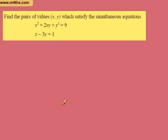In the last tutorial, we introduced simultaneous equations — linear, and when we had a linear and a non-linear. It's not always the case of it being a linear and a quadratic. It could be a linear and a circle, a cubic, a reciprocal. So we just say we have one linear and one non-linear.